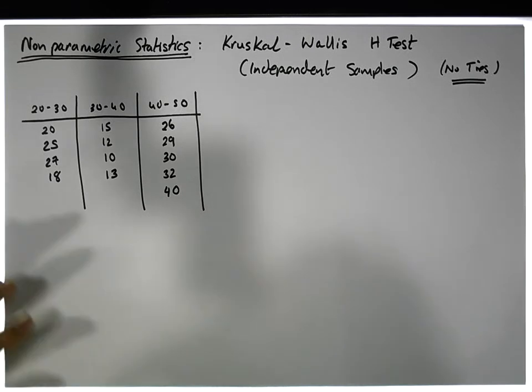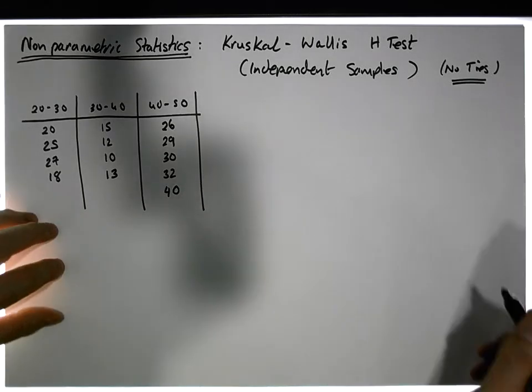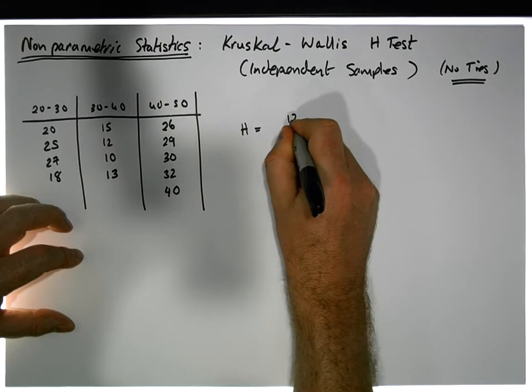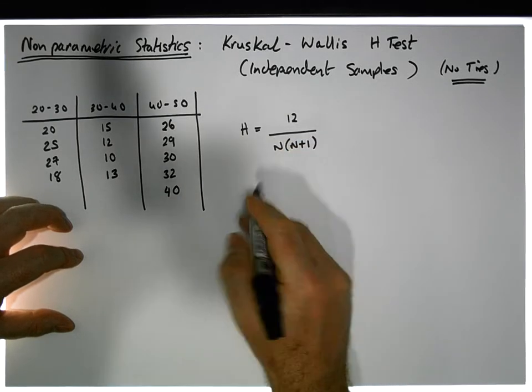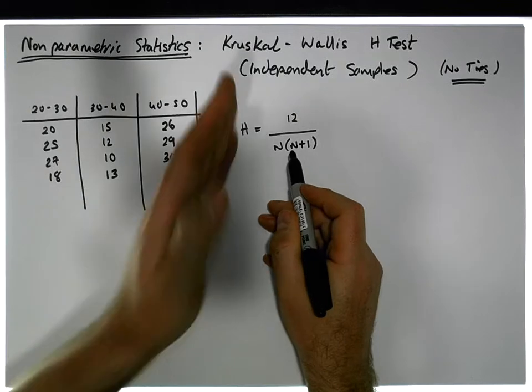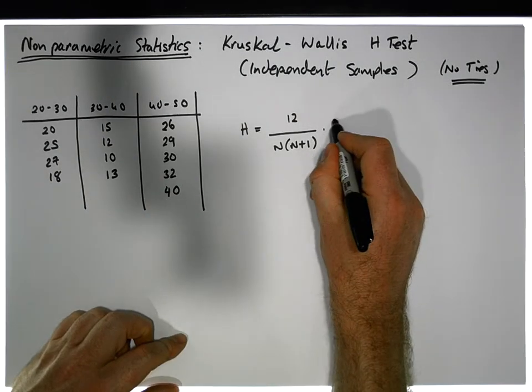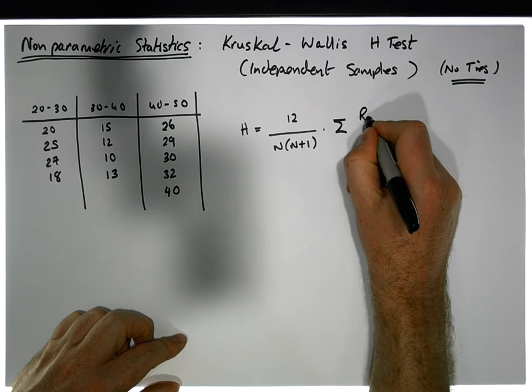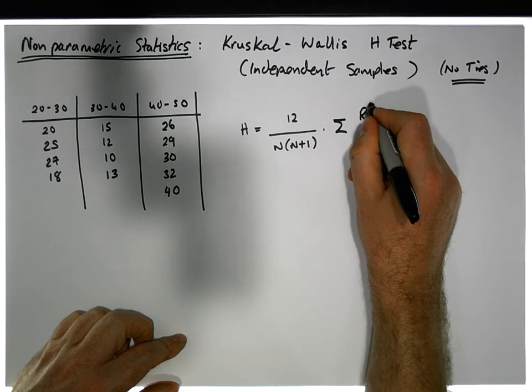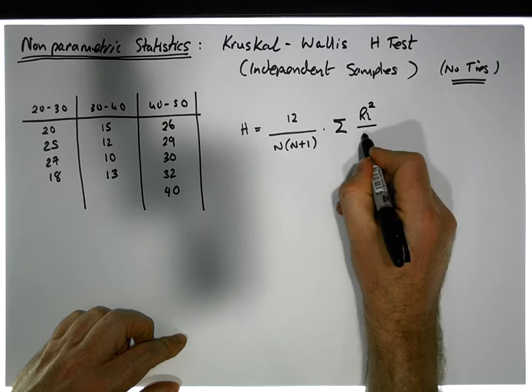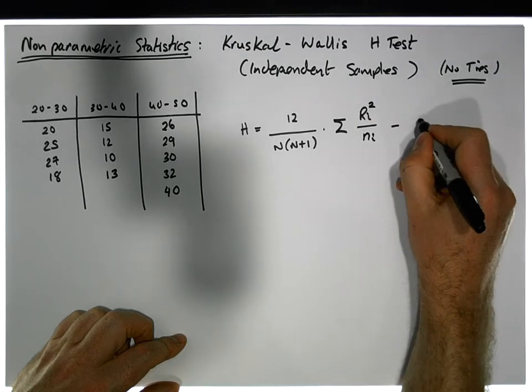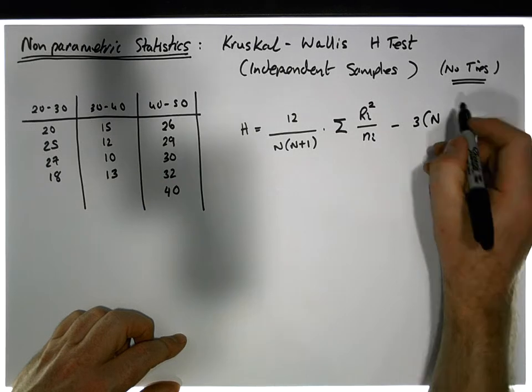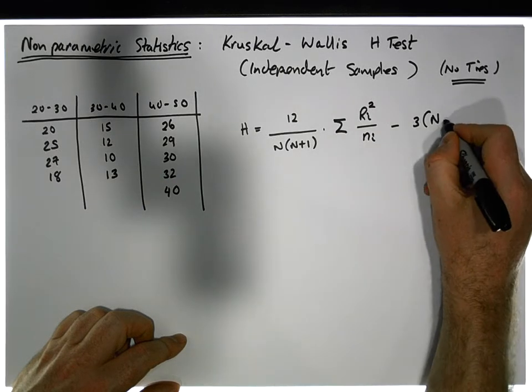But the test statistic, just to keep in mind, it looks very complicated looking, but it's actually straightforward. It's H is equal to 12 divided by n times n plus 1, where n is the total number of observations across all of your groups, which needs to be multiplied by the sum of, for each group, we need to rank the group or sum up its ranks, and then we square that divided by the group size. And then from that, we're going to deduct three times the total size of all observations or across all samples, plus one.